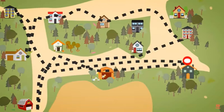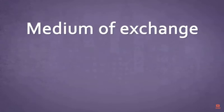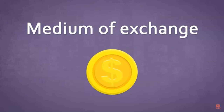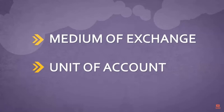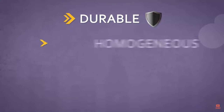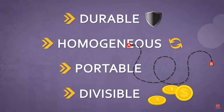Barter trade is ineffective and time consuming. People need something that can be used as a medium of exchange — something everyone can accept. That's money. Money has specific properties: it is a medium of exchange, avoiding Katherine's problem, and a unit of account used to measure costs and revenues. Key characteristics of money include being durable (lasts a long time), homogeneous (each unit identical), and portable (small enough to carry).